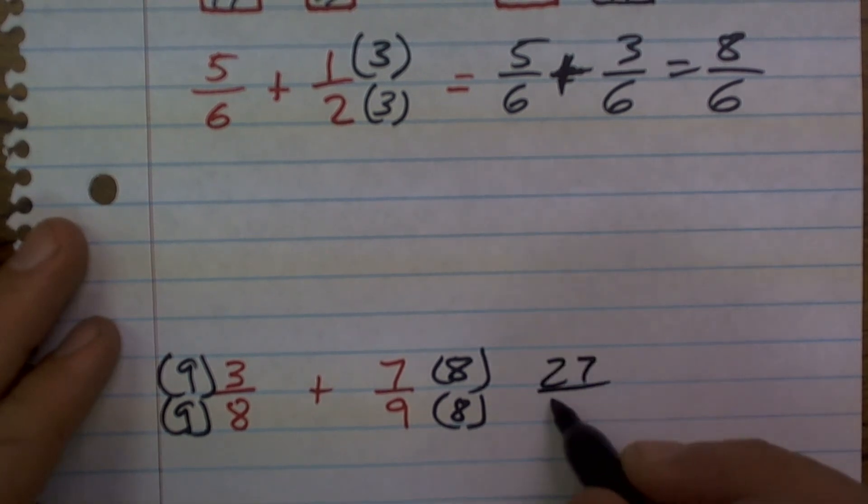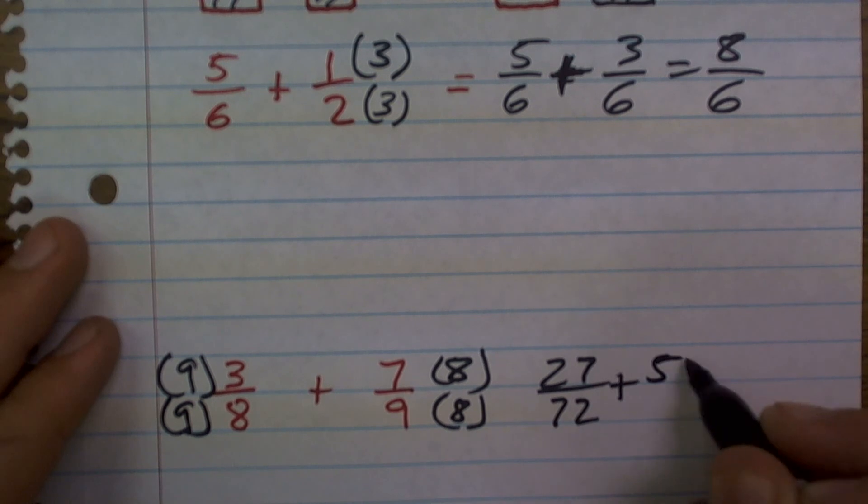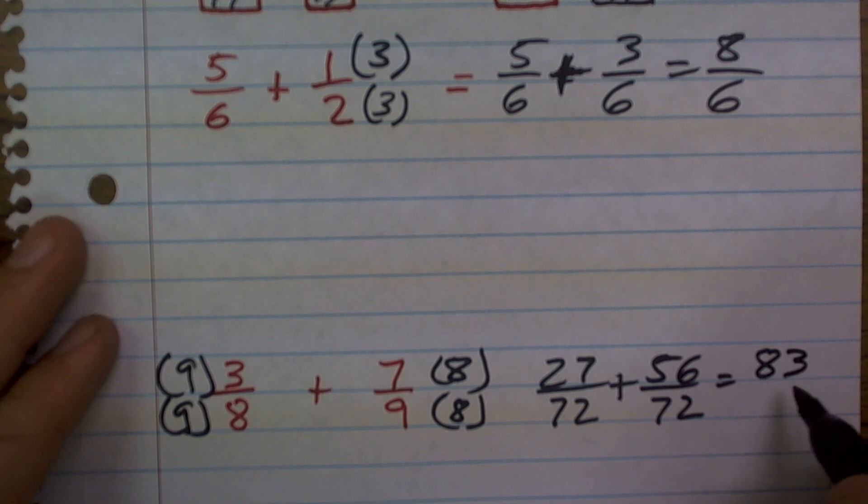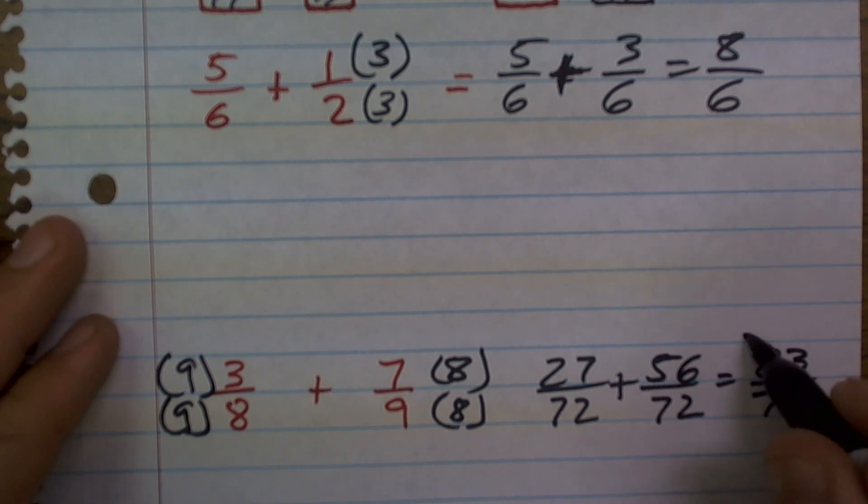Therefore, I now obtain 27/72 plus 56/72. I can now add, and what I obtain is 83/72.